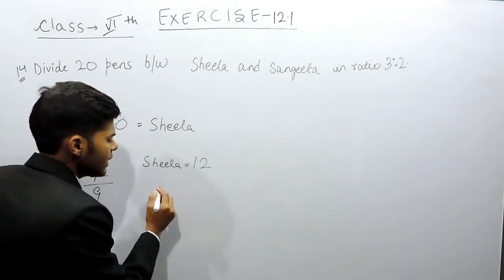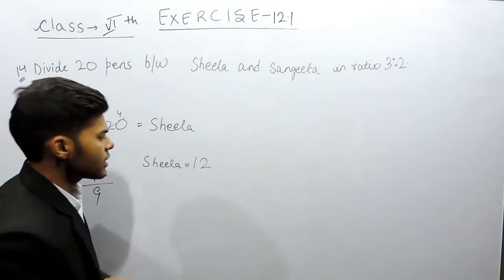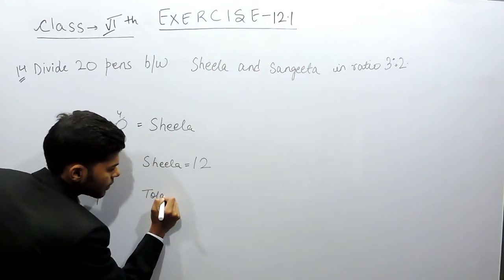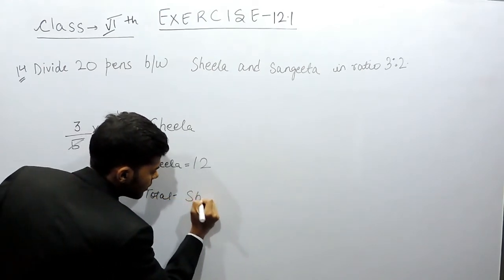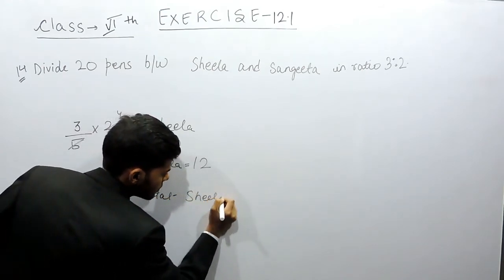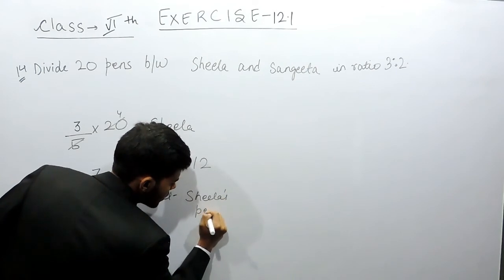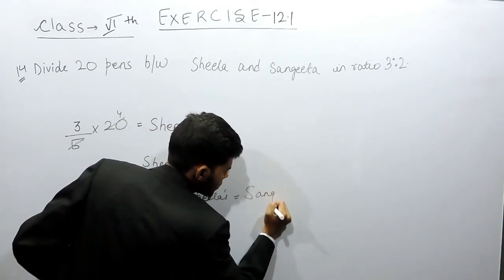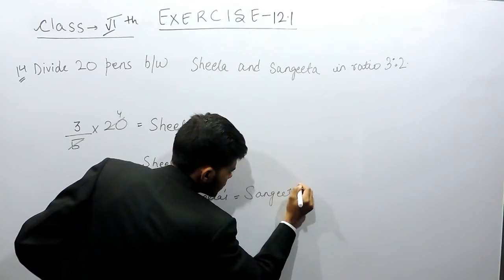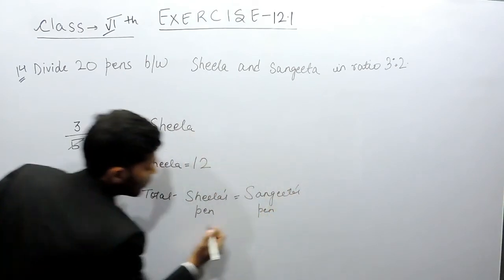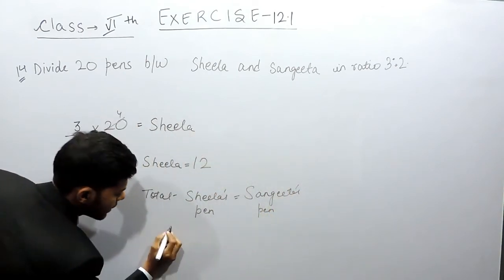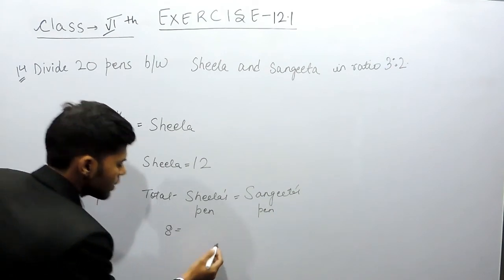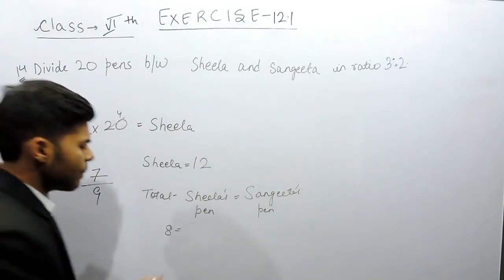Now for Sangeeta, there are two methods. The first is: total minus Sheila's pens will be equal to Sangeeta's pens. That will be equal to 8. That means Sangeeta is having 8 pens.